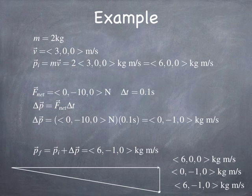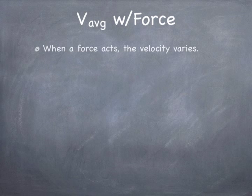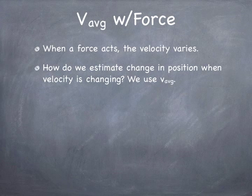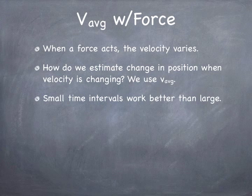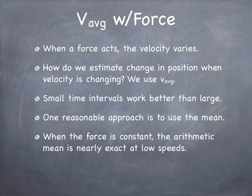Now we know how to update the momentum of a system undergoing an interaction with its surroundings. The next question is how do we update the position? When you update position, you need to use the average velocity over the time interval. When a force acts, the velocity is not constant — it varies. To estimate the change in position when velocity is changing, we use the average velocity. Small time intervals work better, and over a small enough interval, a reasonable approach is to use the arithmetic mean of the initial and final velocities, which is exactly correct when the force is constant.